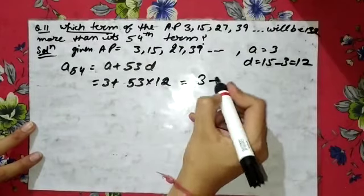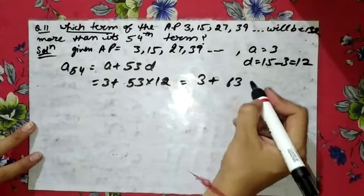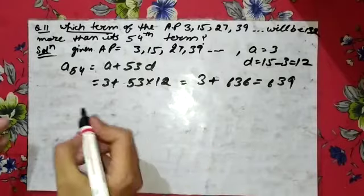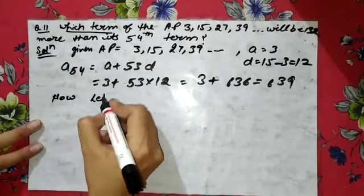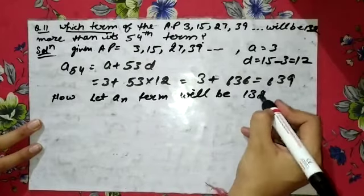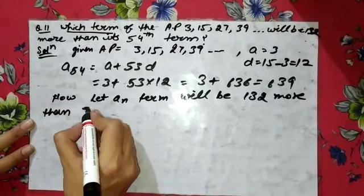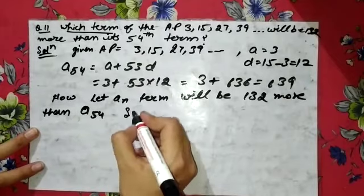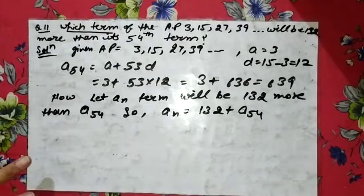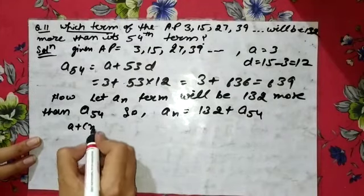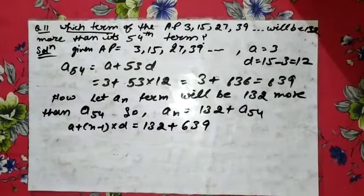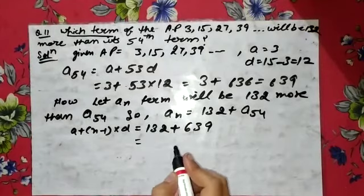So a54 = 3 + 636 = 639. Now we let an be the term that is 132 more than a54, so an = 132 + a54 = 132 + 639 = 771. Using the formula: an = a + (n−1)d, we have 771 = 3 + (n−1)×12.